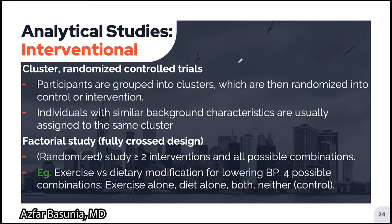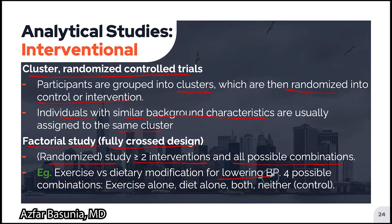Other design choices for clinical trials include cluster randomized control trials, where participants are grouped into clusters and clusters are randomized into control or intervention arm. Individuals with similar background characteristics are generally assigned to the same cluster. A factorial study design, also known as a fully crossed design, investigates two or more interventions and all possible combinations. For example, studying the effect of exercise versus dietary modification for lowering blood pressure would yield four combinations: exercise alone, dietary modification alone, both exercise and dietary modification, or the control with neither.